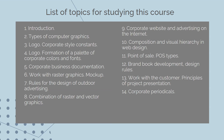The main topics of the course are: introduction, types of computer graphics, logo, corporate style constants, logo formation, palette and corporate colors and fonts, corporate business documentation, work with raster graphics, mockups, rules for the design of outdoor advertising, combination of raster and vector graphics, corporate website and advertising on the internet, composition and visual hierarchy in web design, point of sales post types, brand book development, design rules, work with the customer, principles of project presentation, and corporate protocol.